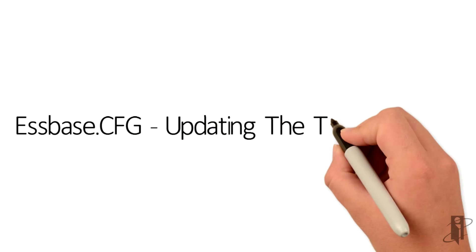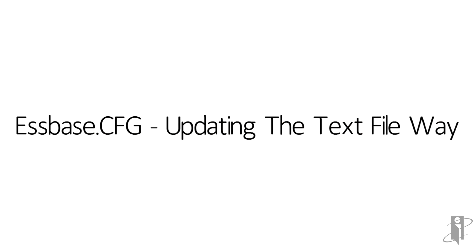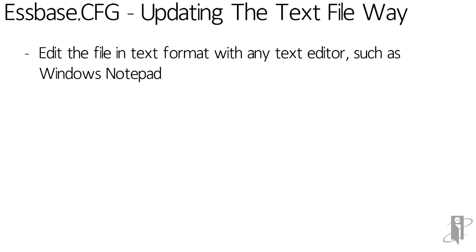So how can you update this sspace.cfg file? It's nothing but a text file, and an initial one is created when you install sspace and placed in your sspace bin directory. Navigate down to that bin directory on your server and open it up with your favorite text editor — mine happens to be Windows Notepad. It's a very expensive application, but it does come with its own free copy of Microsoft Windows when you buy it.